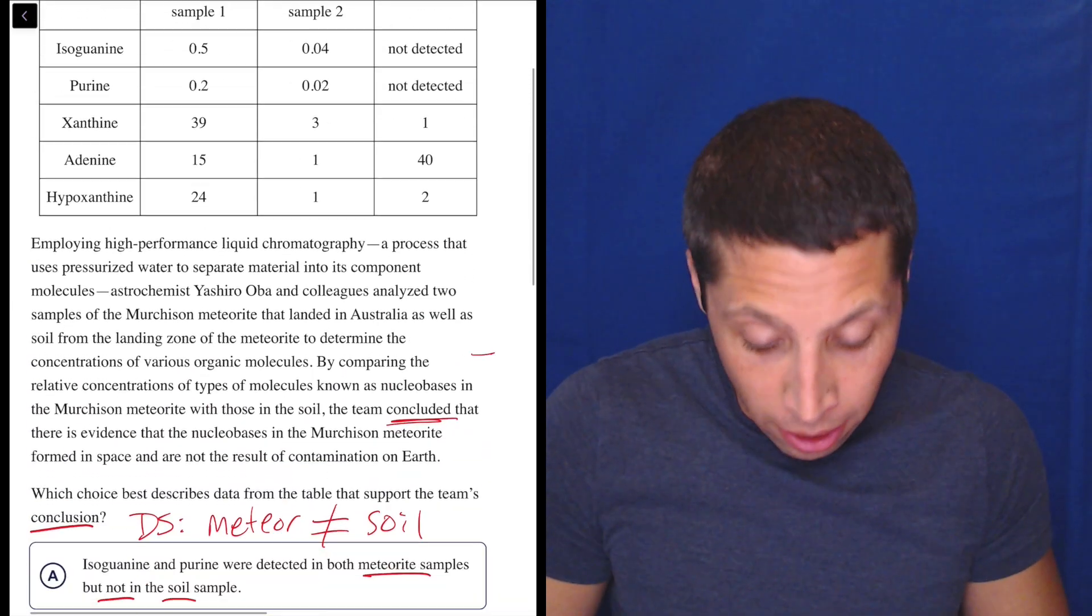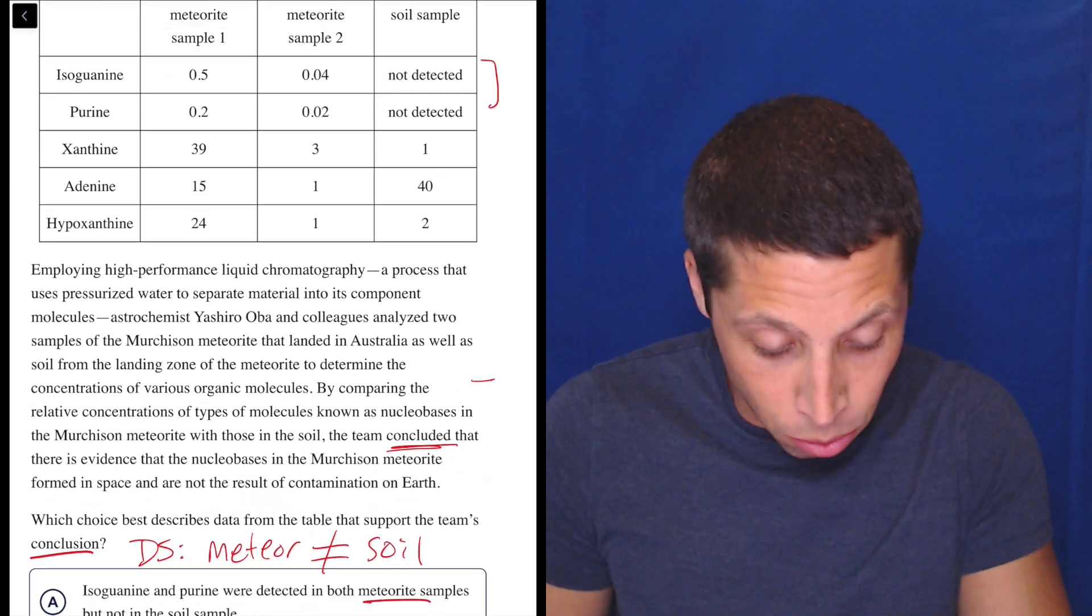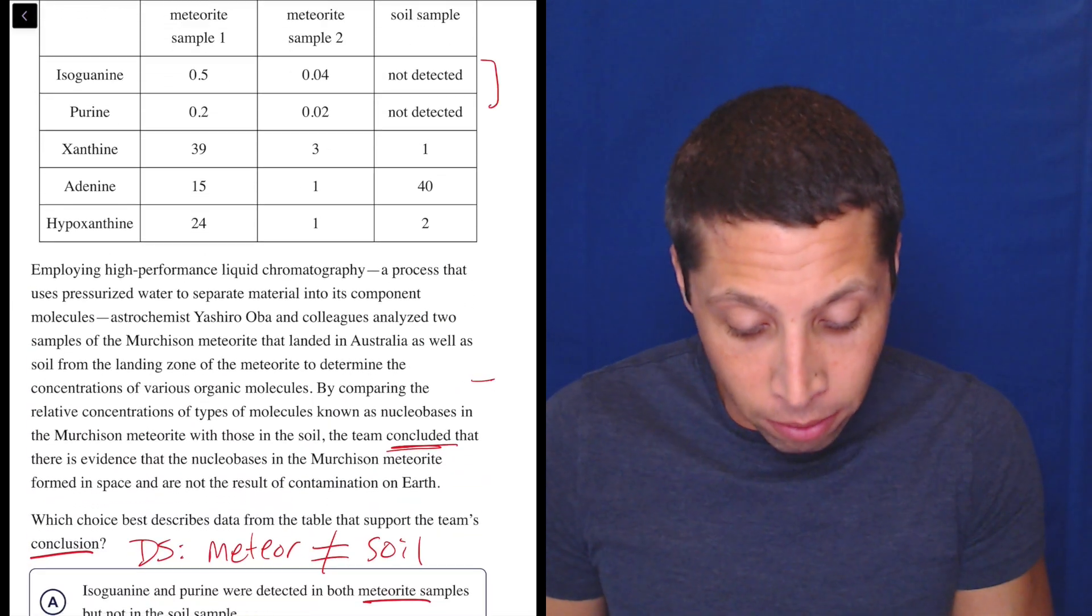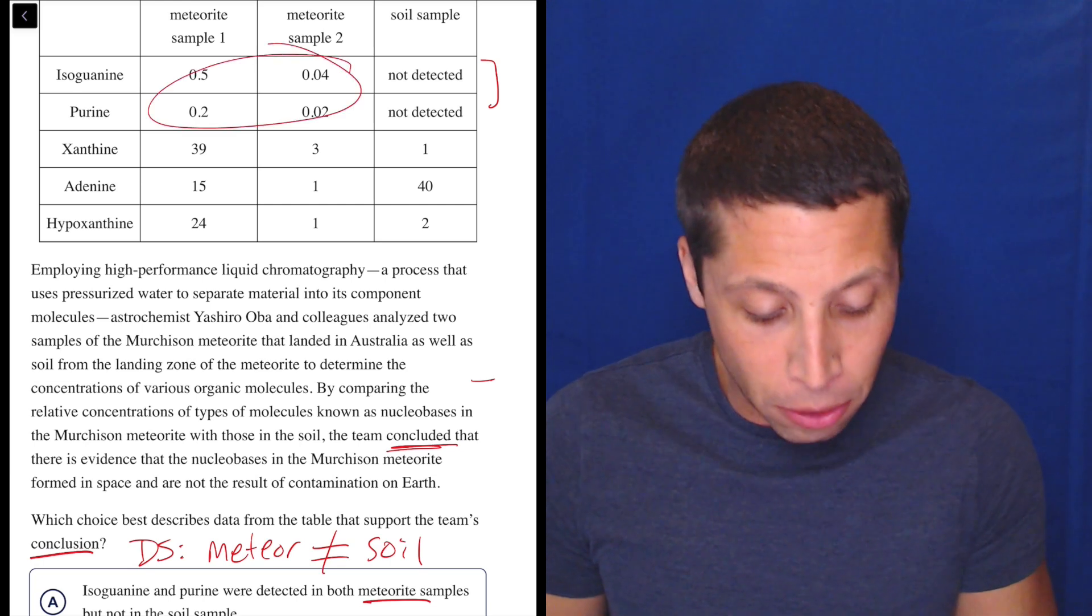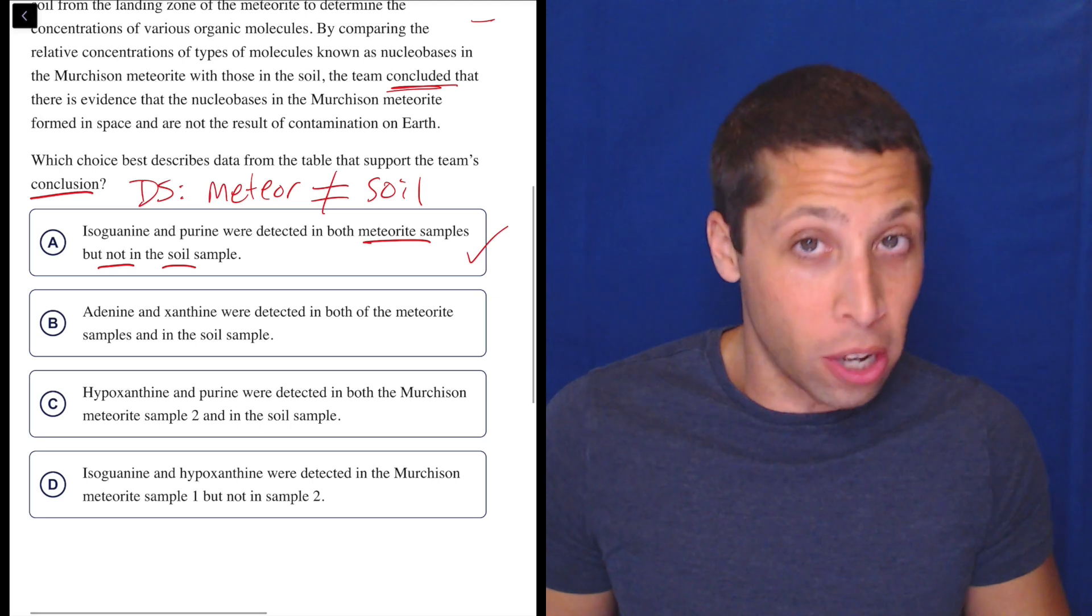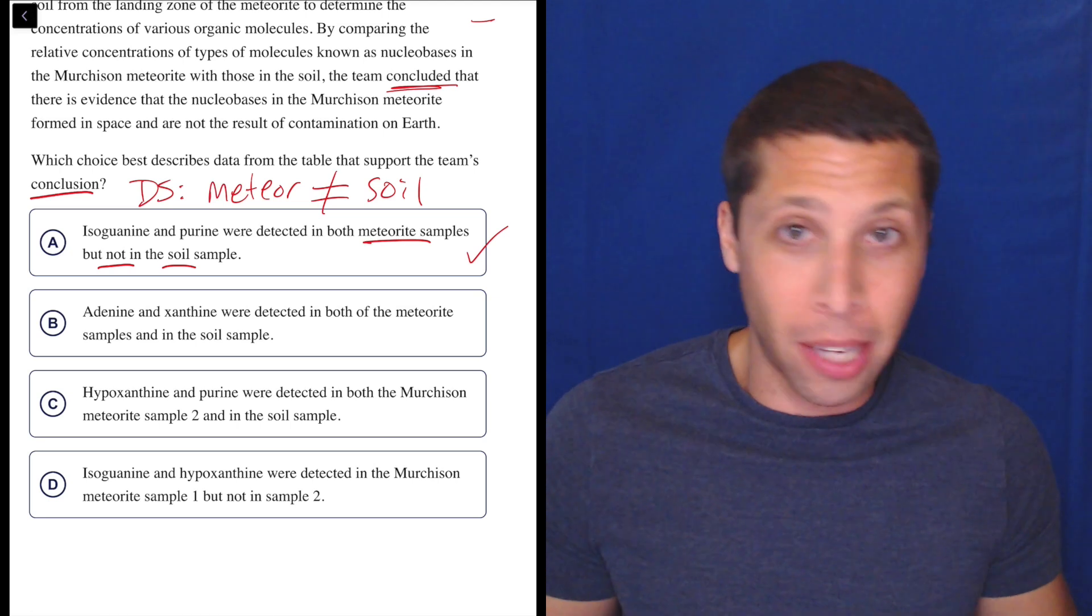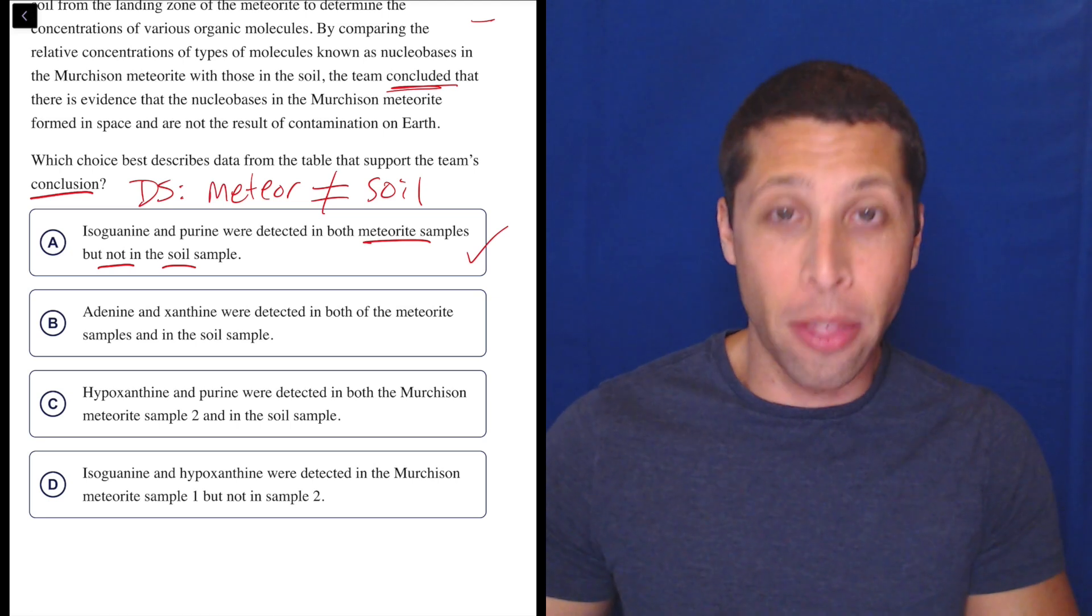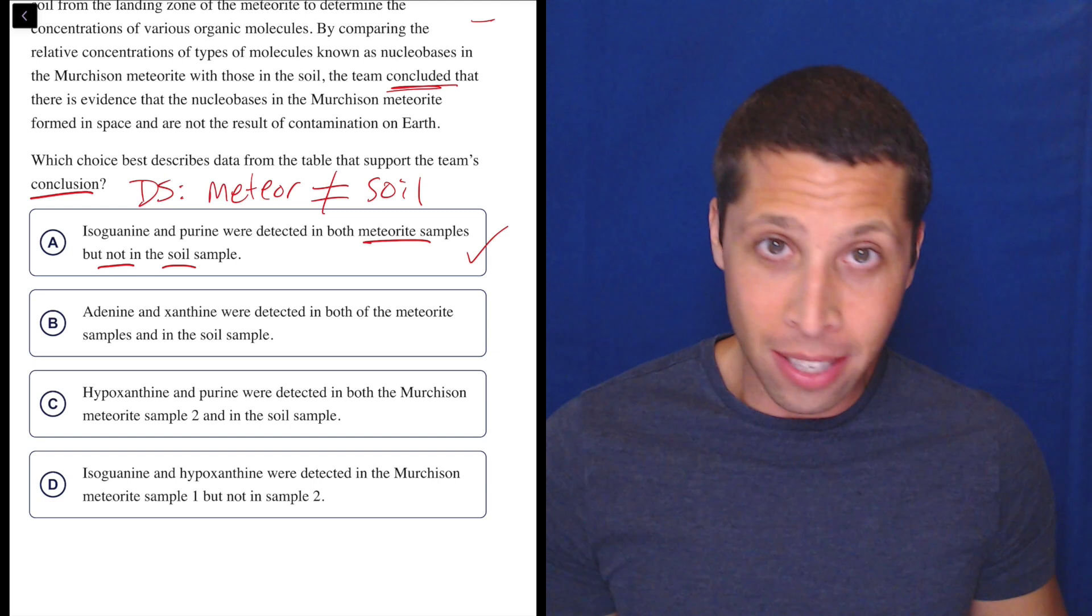Isoguanine and purine, that's these two things. Yeah, they're in the meteorite. They're in these two columns here on the left, but they're not detected in the soil. So, so far, this just looks good. I don't know for sure. There's a lot of complicated things going on, so maybe it's more in-depth than that. But let's just look at B and C and D and see what happens.